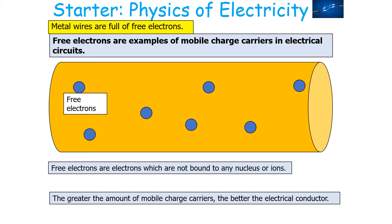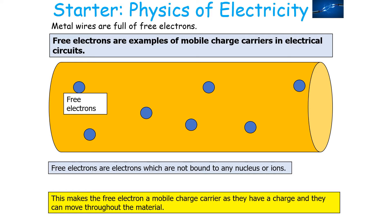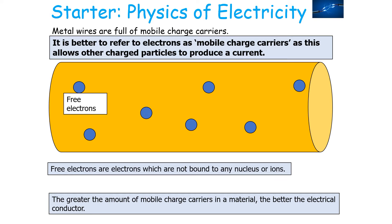The greater the amount of mobile charge carriers, the better the electrical conductor the material is. The free electron is a mobile charge carrier because it has a charge and can move throughout the material. Due to metallic bonding, the outer shell electrons in a metal become mobile charge carriers. Again, the greater the amount of mobile charge carriers in a material, the better the electrical conductor. It's always better to refer to the electrons as mobile charge carriers because other charged particles can produce a current.